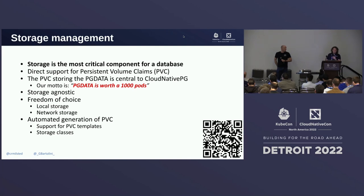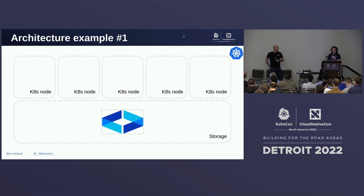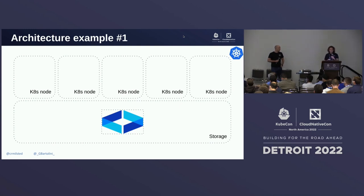We're storage agnostic, and although we recommend share-nothing architectures, you're actually free to choose between local storage, network storage, and hybrid solutions. We support dynamic provisioning and use storage classes and PVC templates. One of the amazing things about Kubernetes is that it enables us to build a virtual data center using declarative configuration — infrastructure as code. I'll go through some examples of architectures from the most basic one to a disaster recovery example spanning multiple regions across Kubernetes clusters.